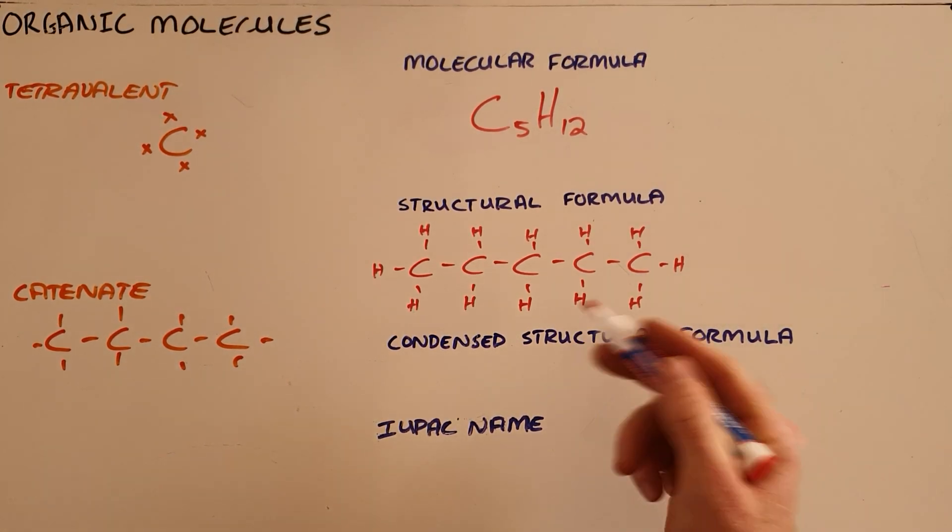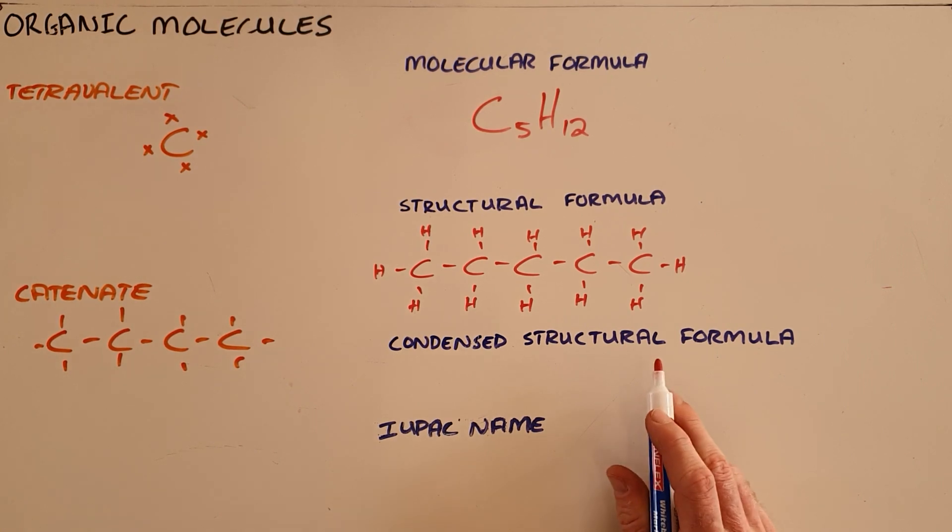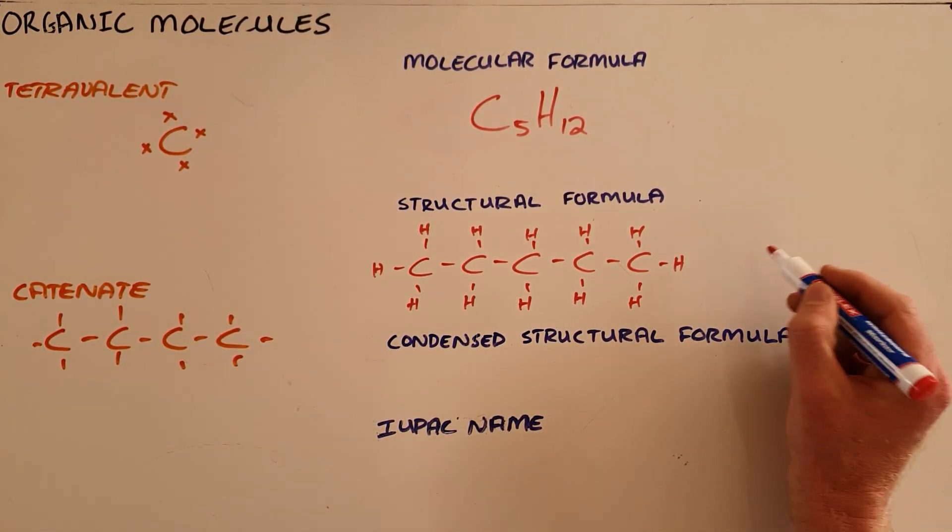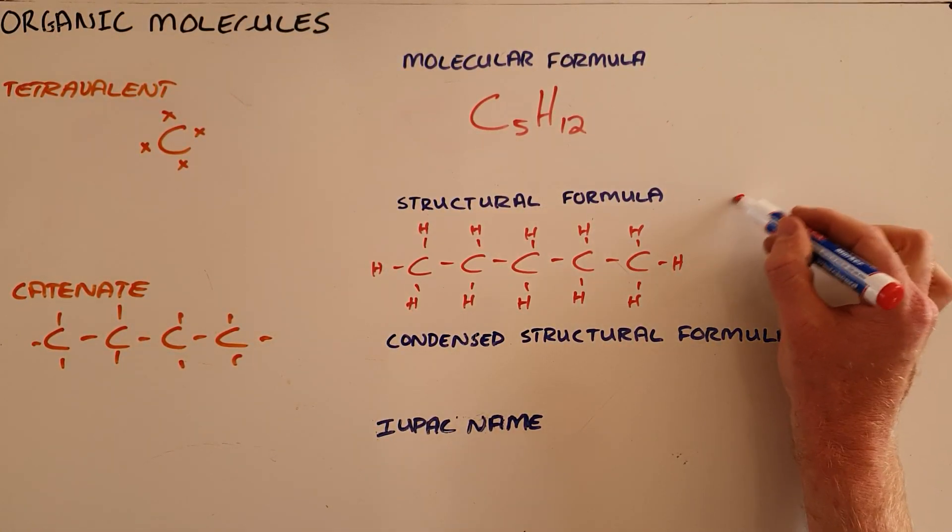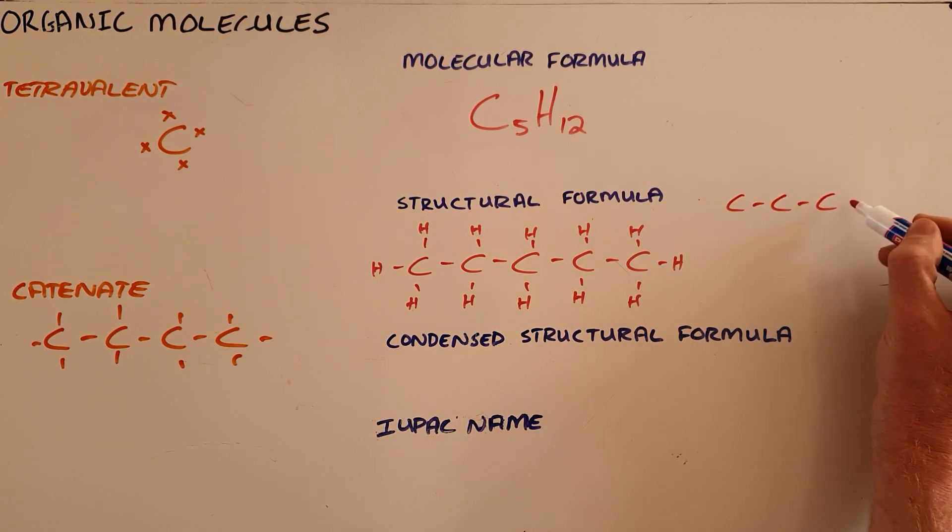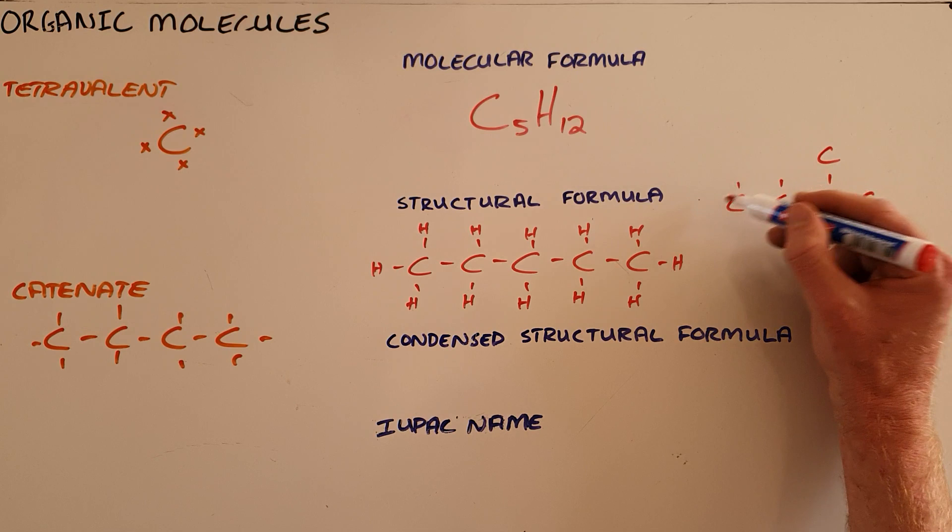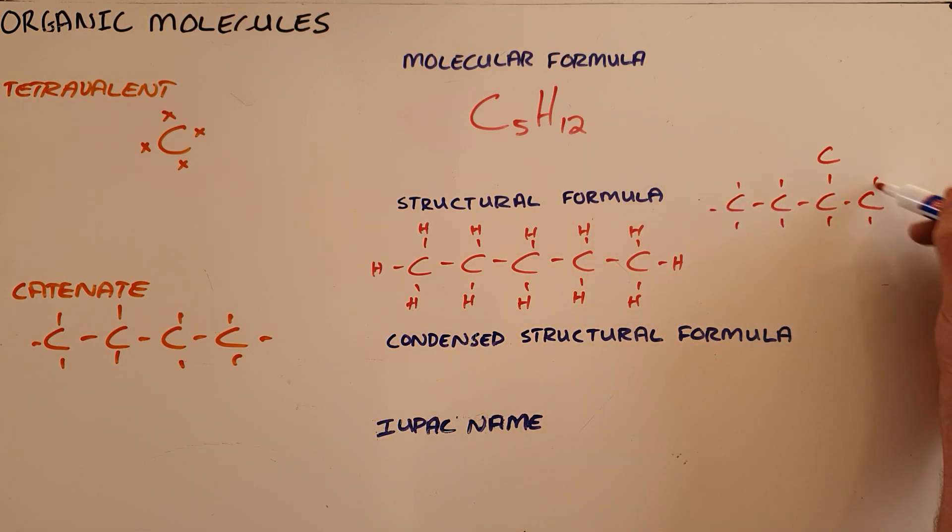The first possible arrangement is five carbons arranged in a straight chain. There are also two other possible arrangements: four carbons with a single branch coming off one of the carbons, and three carbons in a chain with two branches coming off those carbons.